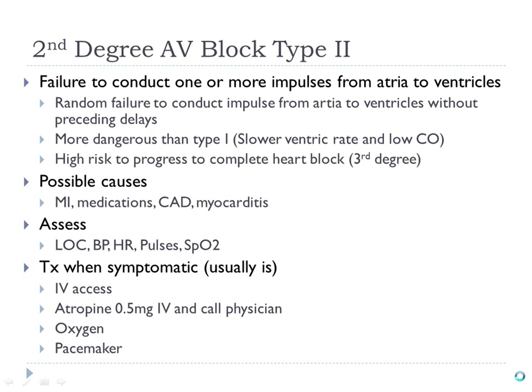A third degree block will follow this — it's the worst block. We can give atropine, but it probably won't help because the problem is not the atrial rate; it's getting electricity from the SA node to the AV node. This patient, especially if symptomatic, might need a temporary pacemaker and may eventually need a permanent implanted pacemaker.